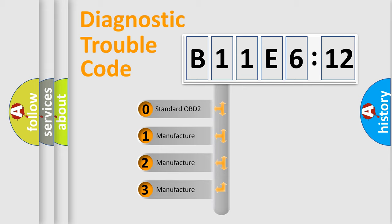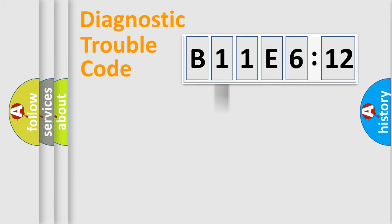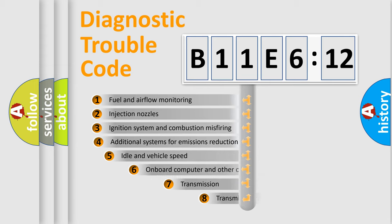If the second character is expressed as zero, it is a standardized error. In the case of numbers 1, 2, 3, it is a more prestigious expression of the car-specific error.